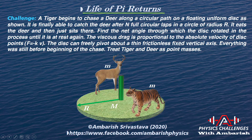Here's the challenge. A tiger begins to chase a deer along a circular path on a floating uniform disc as shown. It is finally able to catch the deer after n full circular laps in a circle of radius R. It eats the deer and then just sits there. Find the net angle through which the disc rotated in the process until it is at rest again. The viscous drag is proportional to the absolute velocity of the disc points — that is, force is minus kv, where v is the velocity of the local point and f is the force on a local patch. The disc can freely pivot about a thin frictionless fixed vertical axis. Everything was still before the beginning of the chase, and treat tiger and the deer as point masses.